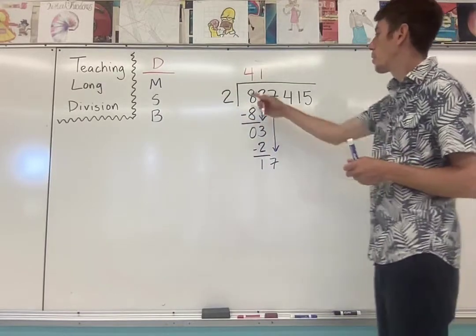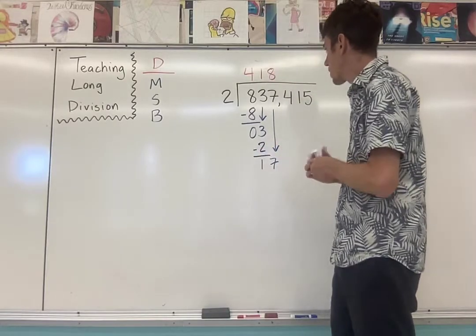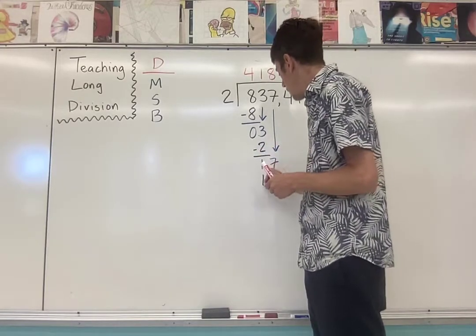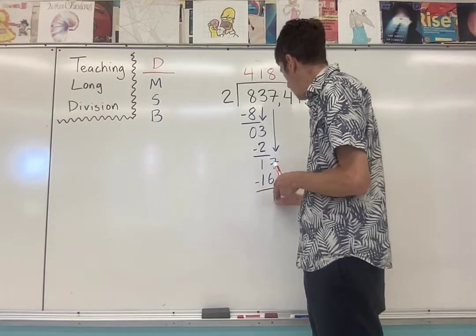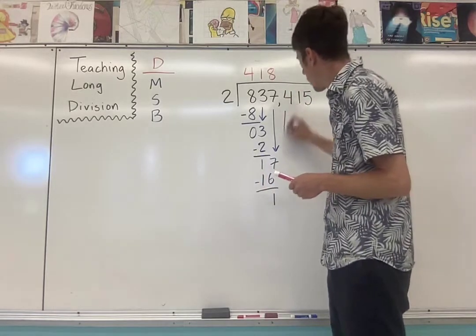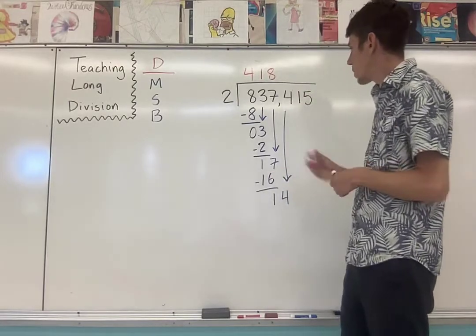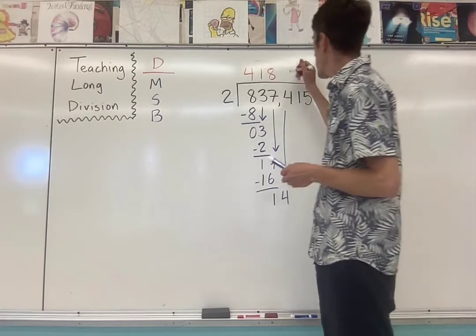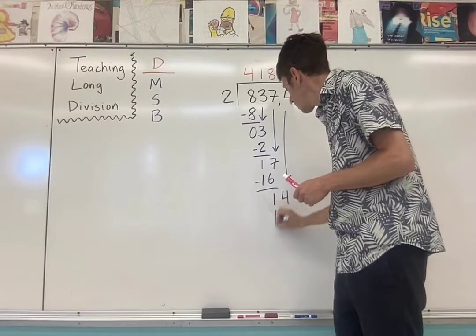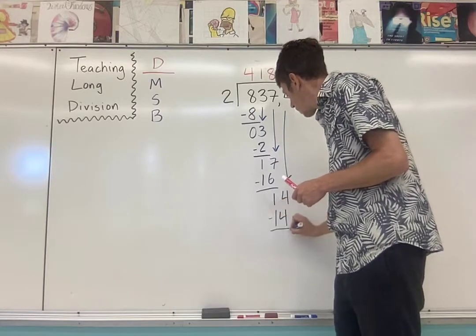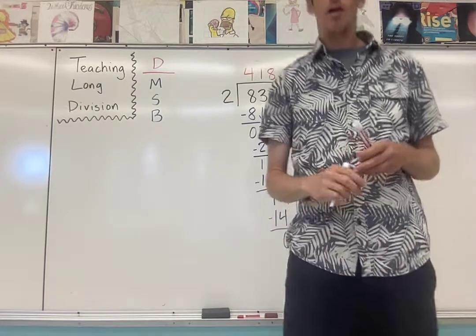How many times can two go into 17? Well, two times eight is 16. So I put the eight there and the 16 down here. One. Bring down the four. Two goes into 14 exactly seven times. Seven times two is 14. Excellent.